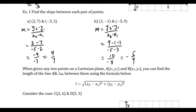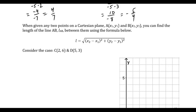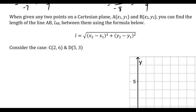Slope is something we're often going to have to find. So take a look at this: two points on a Cartesian plane — that graph with the x and y axes. Point A and point B. You can find the length of the line from A to B using a formula. I'm going to give you a little trick on how to make sense of it.